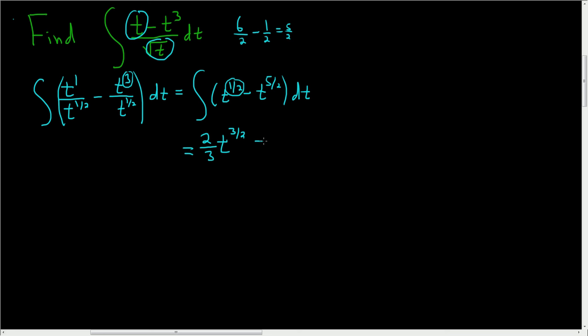Likewise, here we have minus t. Now 1 plus five-halves is seven-halves. So instead of dividing by seven-halves, let's multiply by the reciprocal, which is two over seven, and then plus our constant, which we'll call c. And that's it.